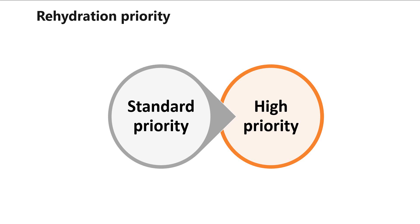Rehydration priority options include standard priority, where the rehydration request will be processed in the order it was received and may take up to 10 hours, and high priority, where the rehydration request will be optimized over standard priority requests and may complete in under one hour for blobs under one gigabyte in size.